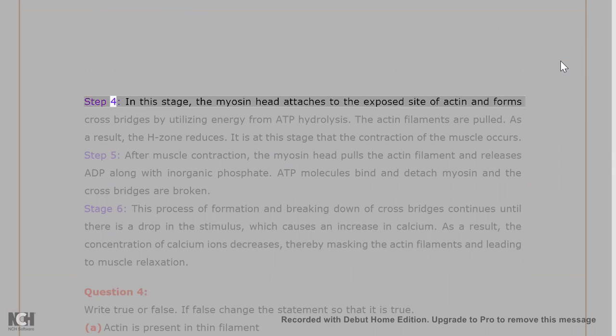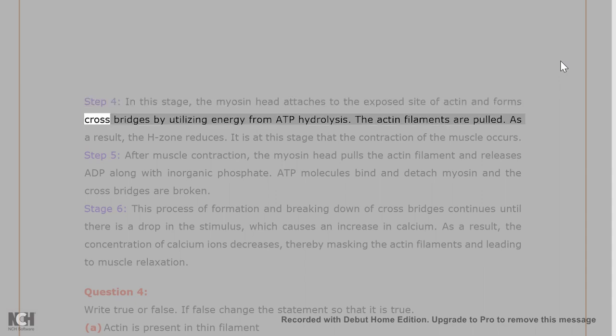Step 4. In this stage, the myosin head attaches to the exposed site of actin and forms cross bridges by utilizing energy from ATP hydrolysis. The actin filaments are pulled. As a result, the H-zone reduces. It is at this stage that the contraction of the muscle occurs.